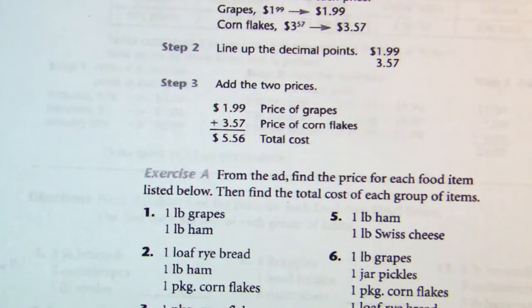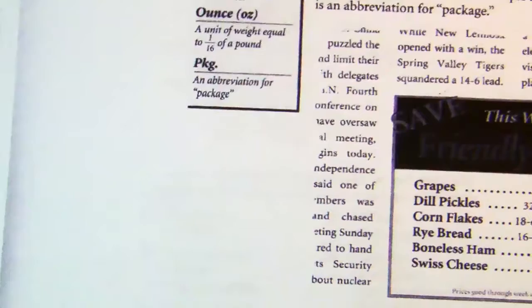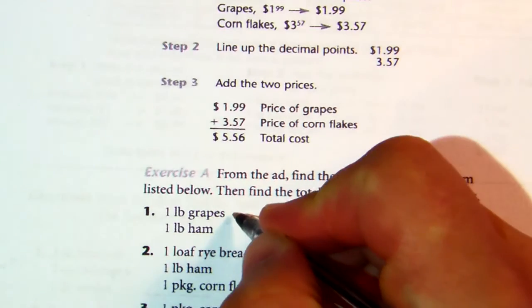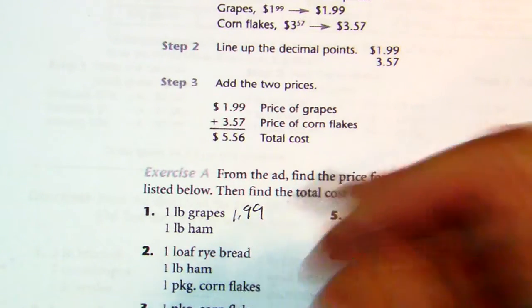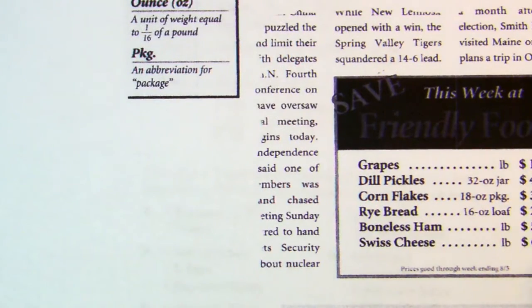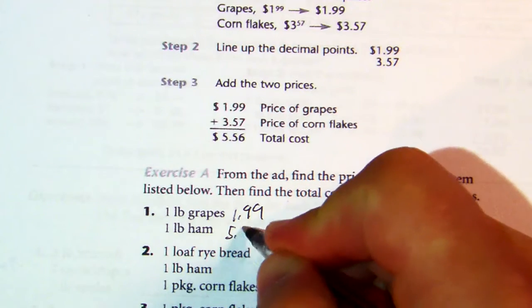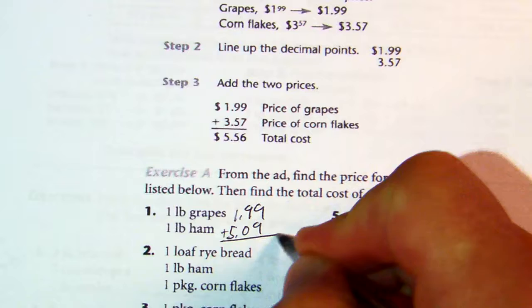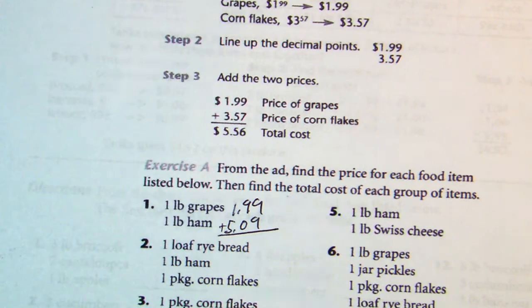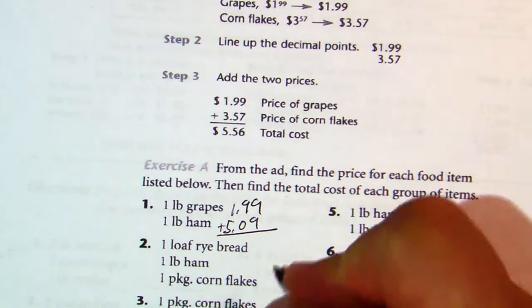If you look at number one, we've got a pound of grapes. A pound of grapes was $1.99, so I'm going to put $1.99 here. Pound of ham, referring to the boneless ham, is $5.09. And we're going to add those prices up to get our total. We'll grab our calculator and say it's $1.99 plus $5.09, which is $7.08.